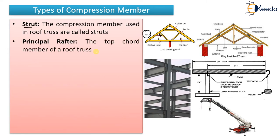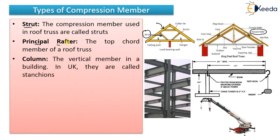Then the principal rafter. The top chord member of a roof truss is known as the principal rafter — that is this topmost member. The topmost chord member of a roof truss is known as the principal rafter, and it is generally considered a compression member.